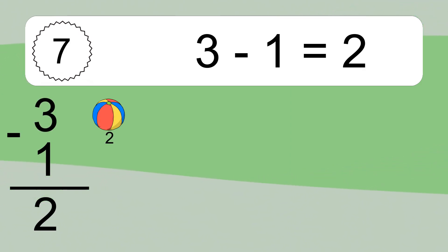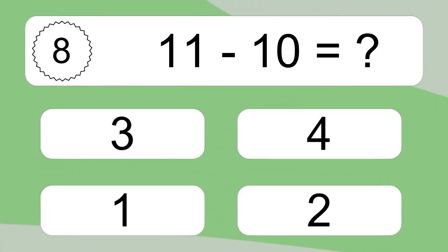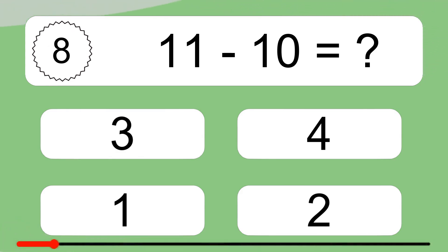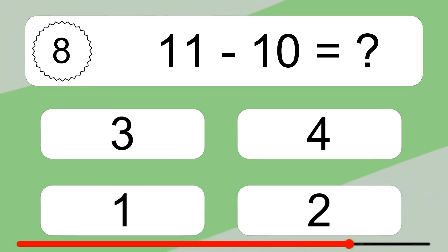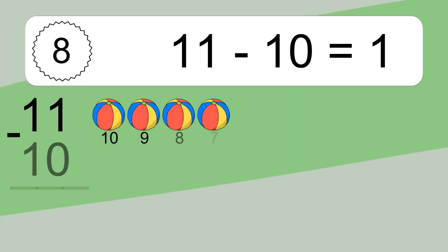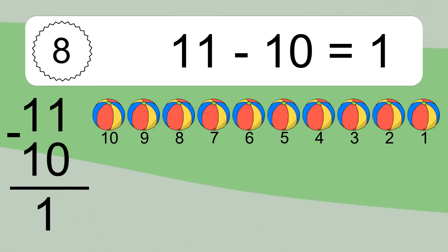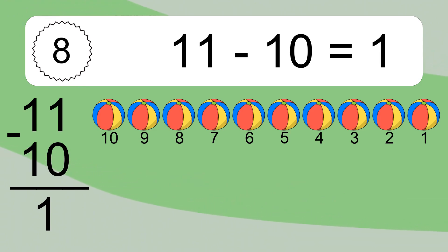Let's count it. 11 minus 10 equals what? 11 minus 10 equals 1. Let's count it: 10, 9, 8, 7, 6, 5, 4, 3, 2, 1.